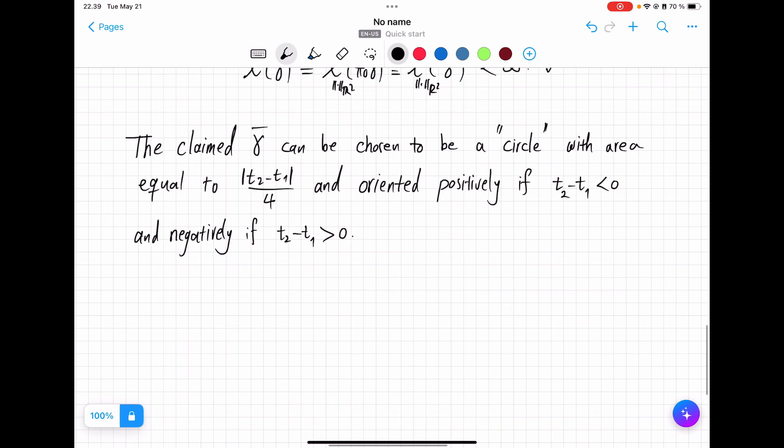So what this gives us is that we will have our point here X1 and Y1. First I make a circle. The first condition that I want is that the area here should be T2 minus T1 divided by 4. This is the area and that determines the radius of the circle uniquely. For orientation, if I have T2 bigger than T1, this condition, I actually should go backward. So if T2 is bigger than T1 then negative orientation.